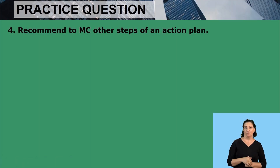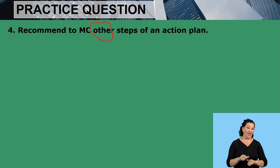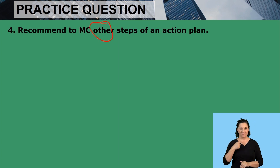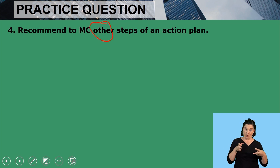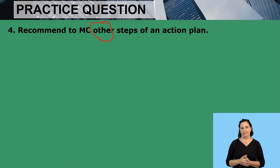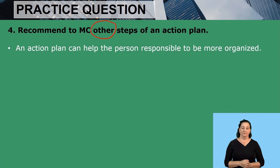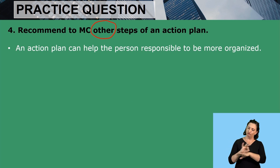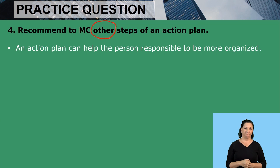Moving on to question four: recommend to MC other steps of an action plan. Since the question says 'other,' the two steps we quoted from the scenario must not be re-mentioned; we focus on other planning steps. An action plan can help the person responsible to be more organized — they would know what the first activity to be done is, followed by which activity, so they become organized knowing how their activities follow each other.